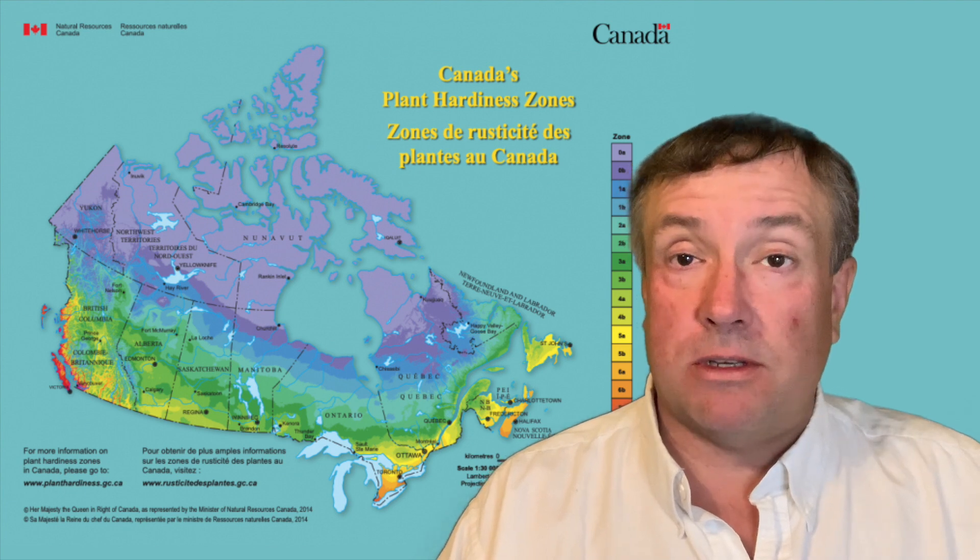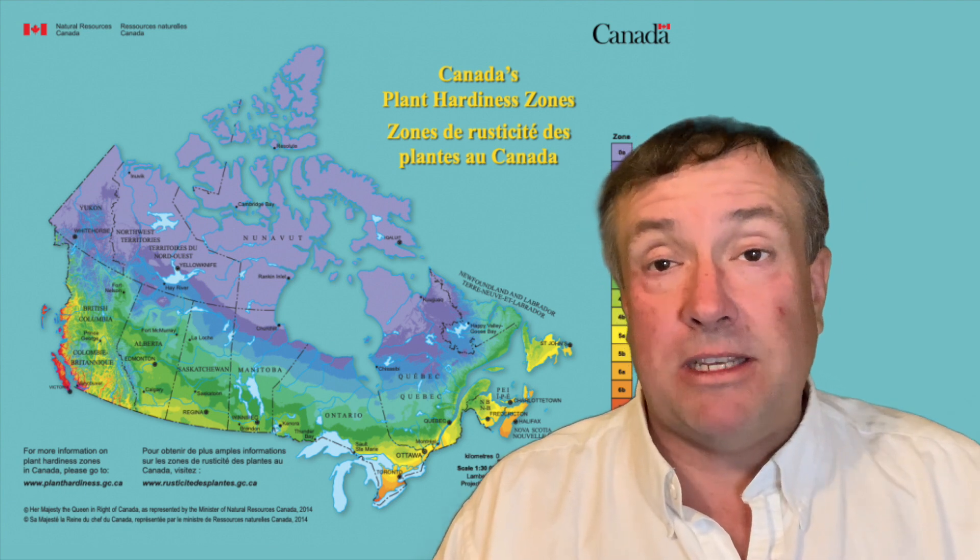Climate zones are an interesting topic. They're based on a few things. Often a simple way is to look at them as latitude — how far north or south you are. But that's not all of it. Location to the ocean and ocean currents can drastically affect your climate, as well as being in an arid or a super wet area. Canada and the United States actually have different systems for how we rank our climate zones.